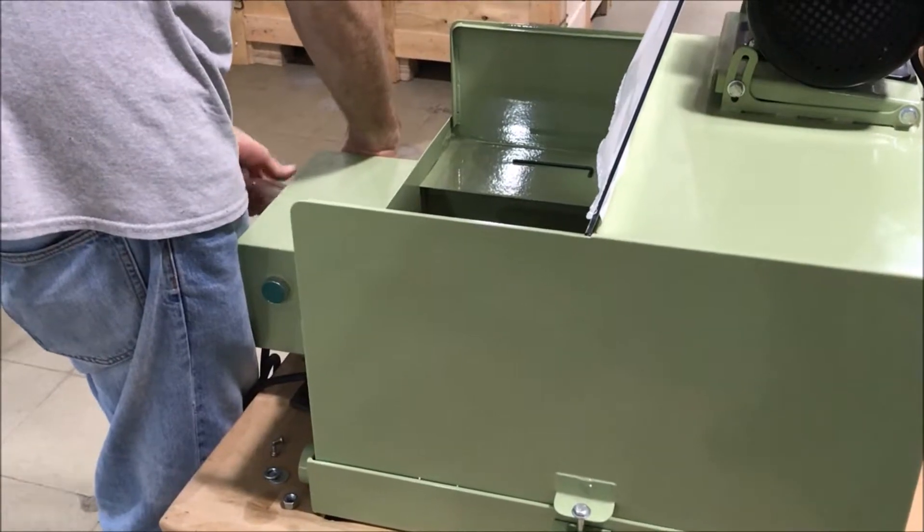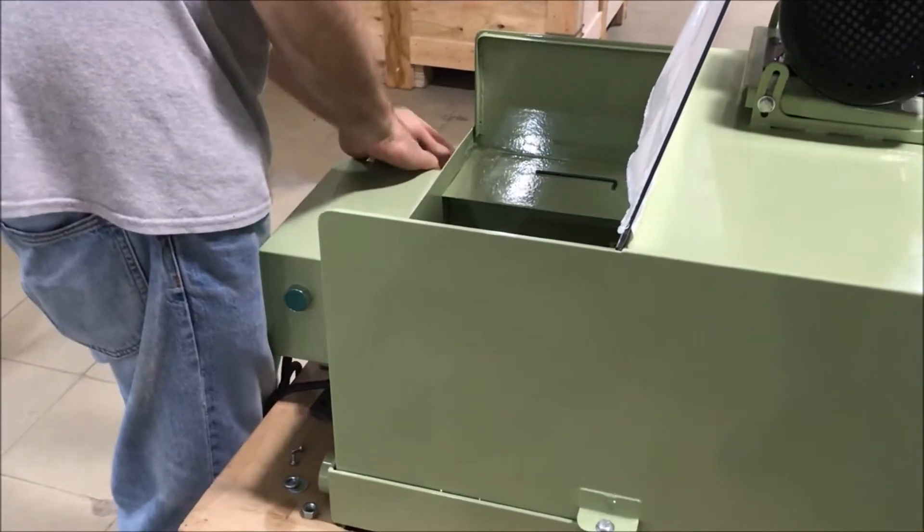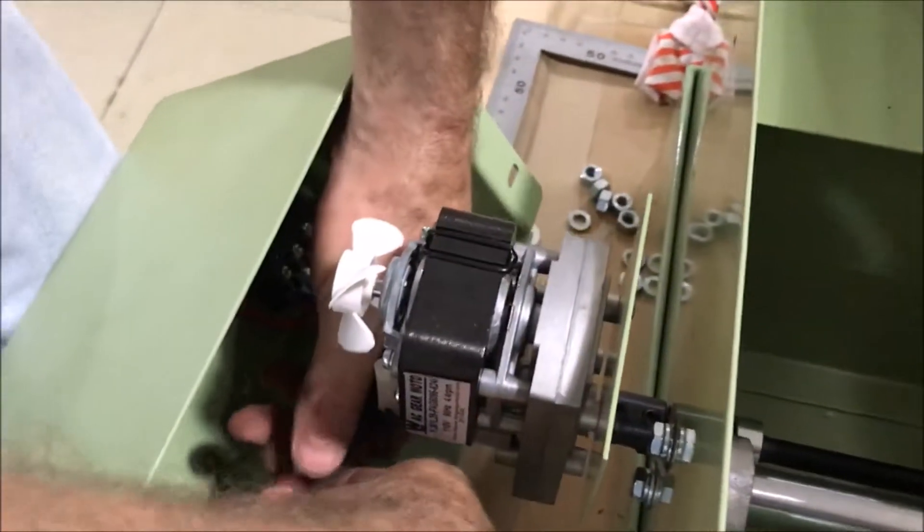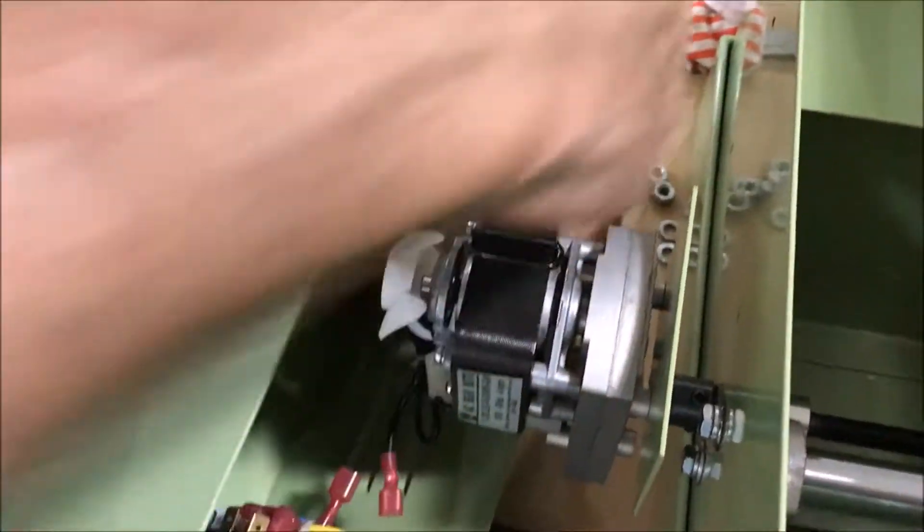And then when you go to pull the control box off, basically you've got a couple of leads on the motors. You want to pull them apart by the connectors so you don't screw up your harness. So you unplug the motor, and now your control box is completely free.